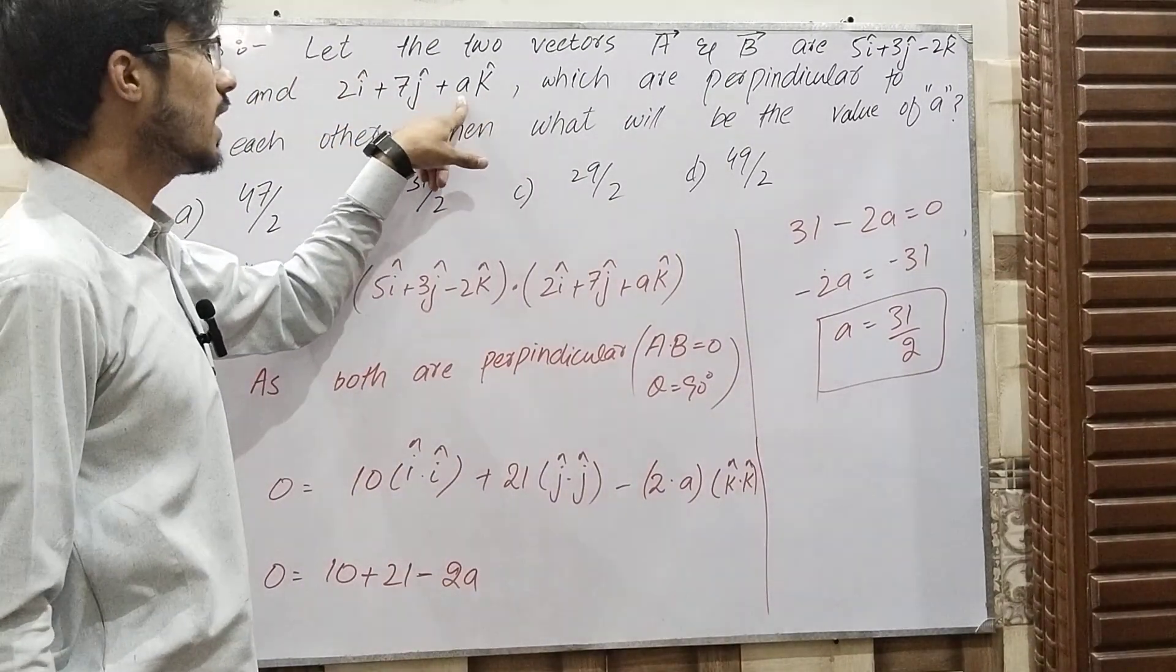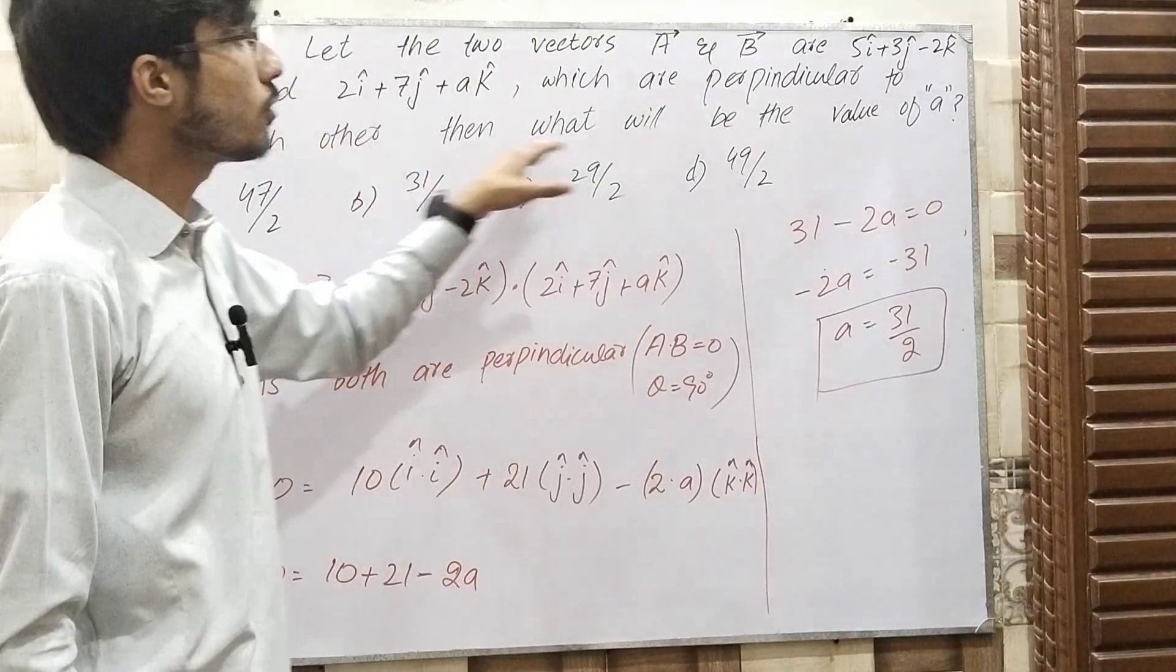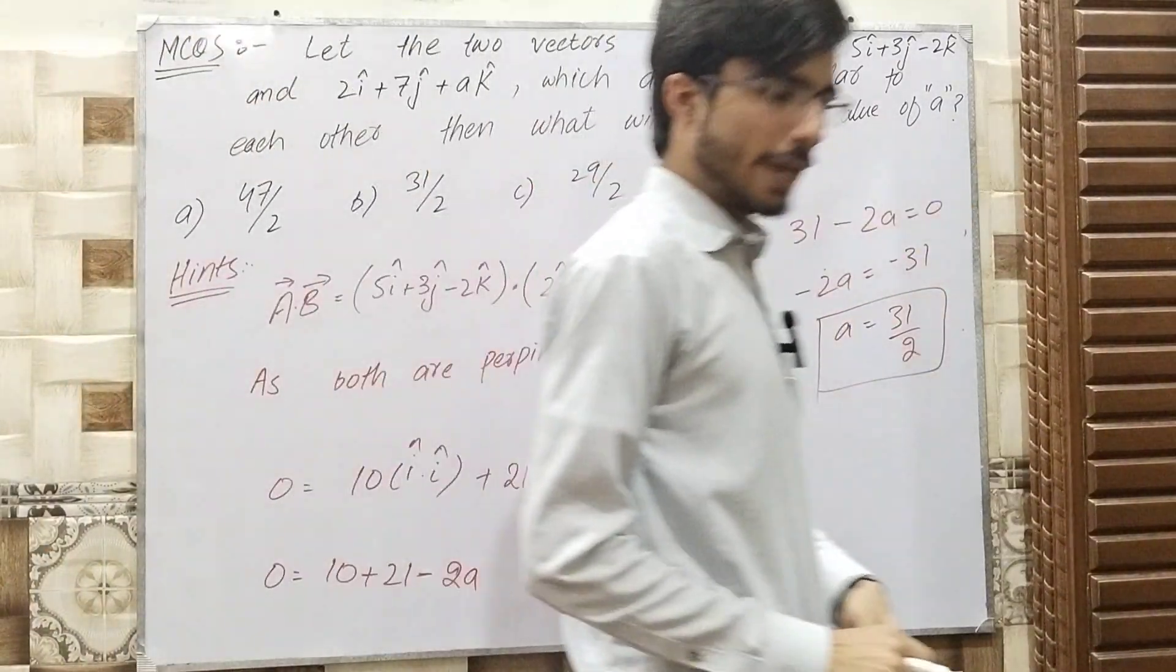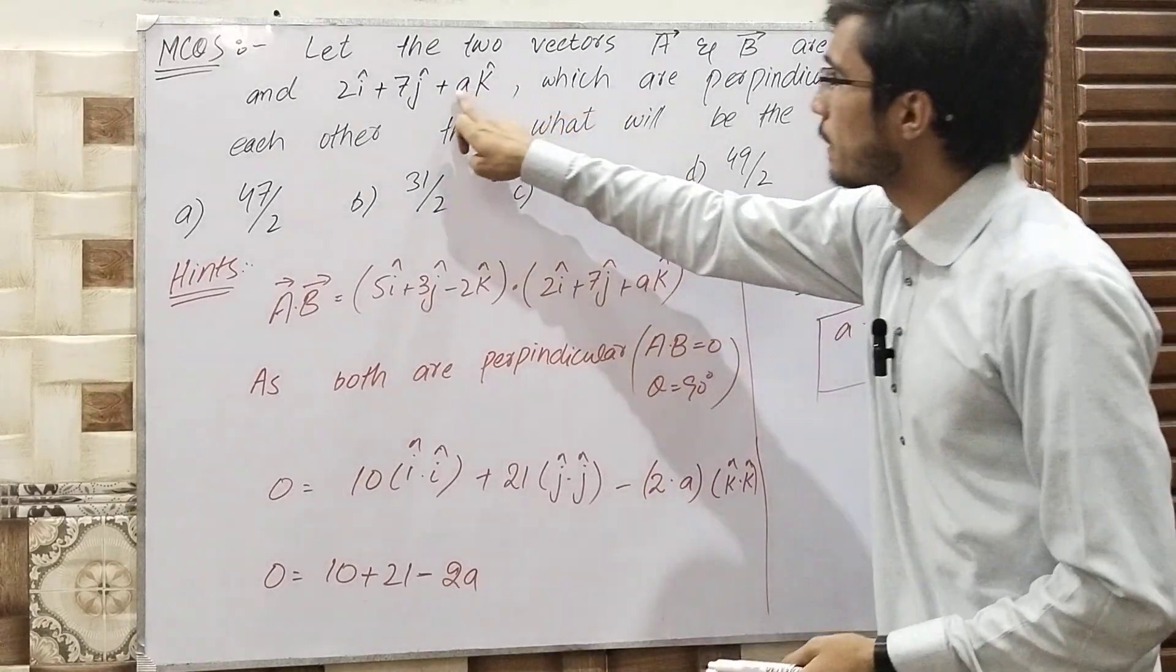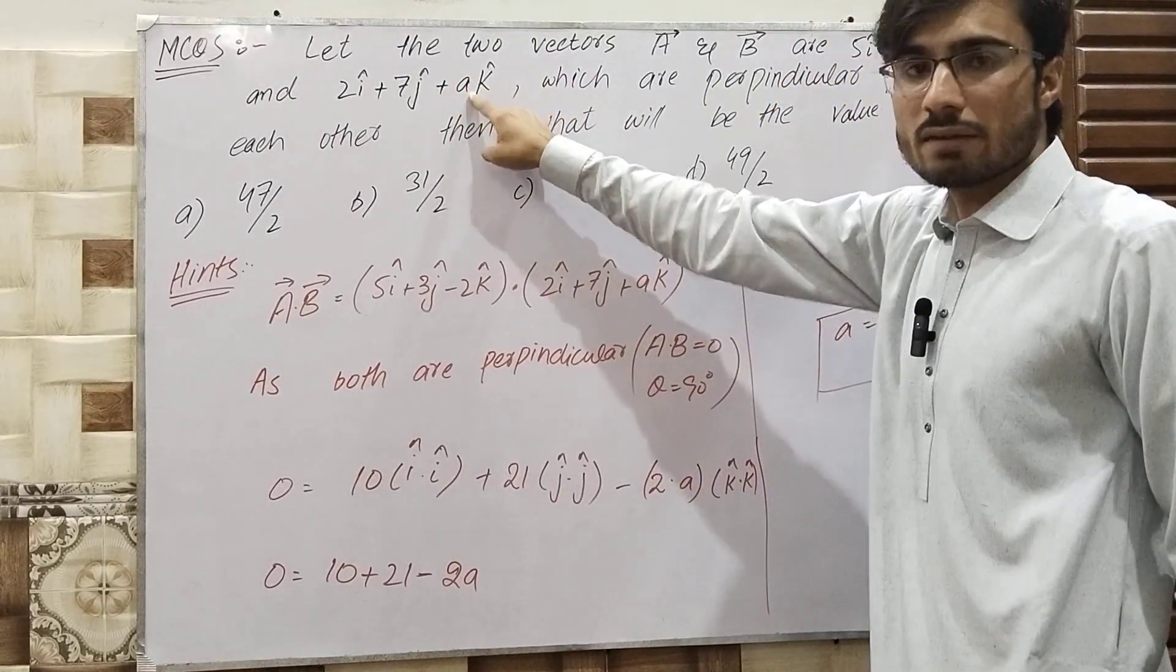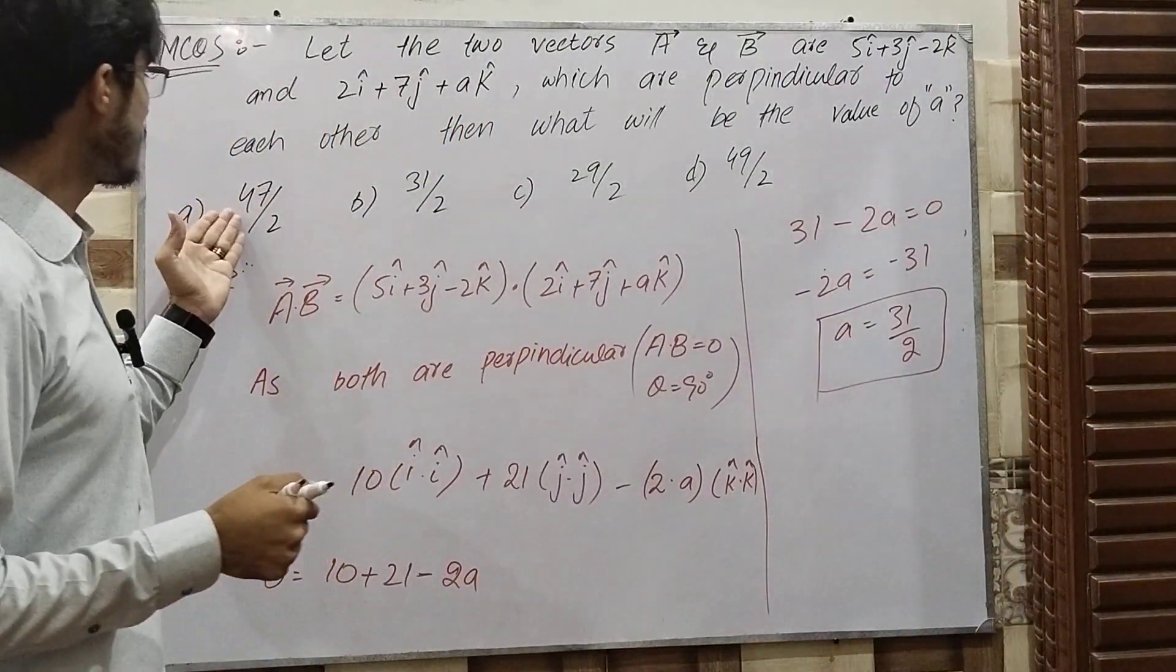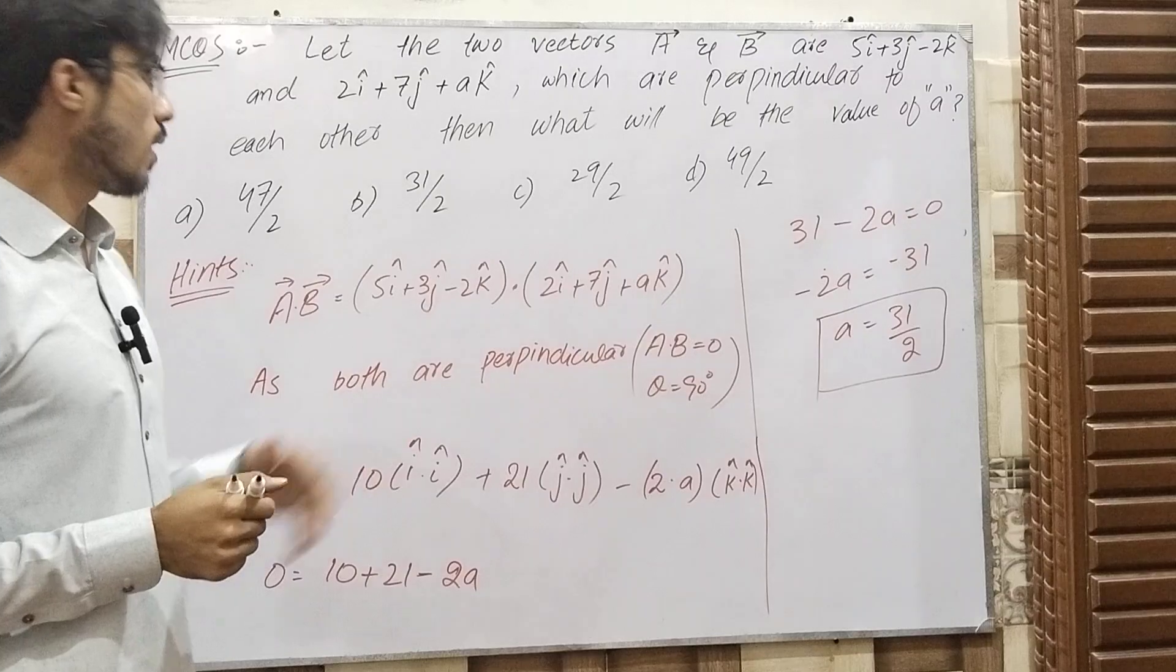These vectors are perpendicular to each other. Then what would be the value of a? Given these two vectors, we need to find the value of a from the given options.